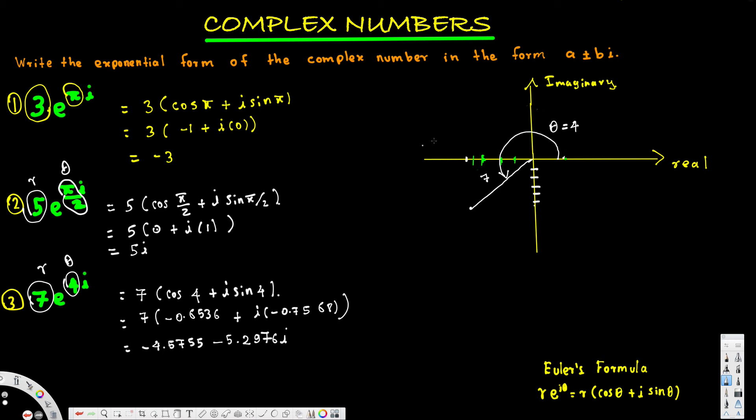That's how we convert a complex number in exponential form to Cartesian form, also called rectangular form. I hope this helps — thanks for watching.